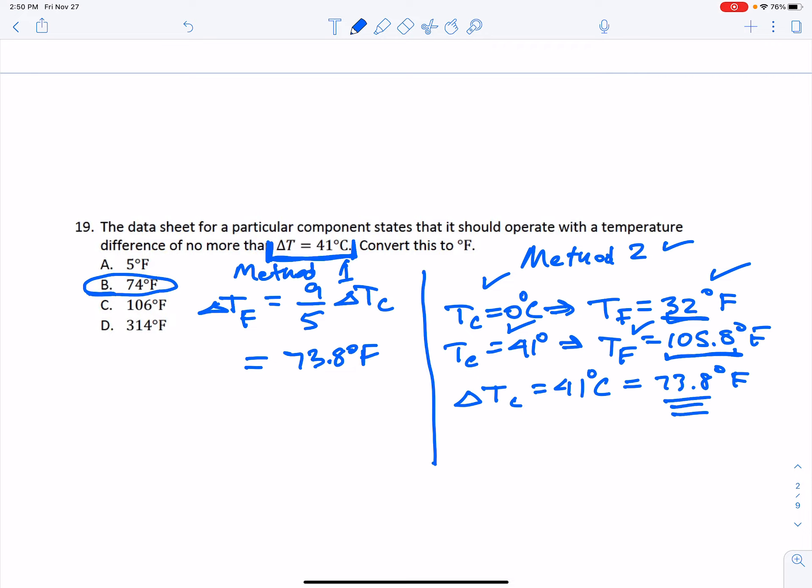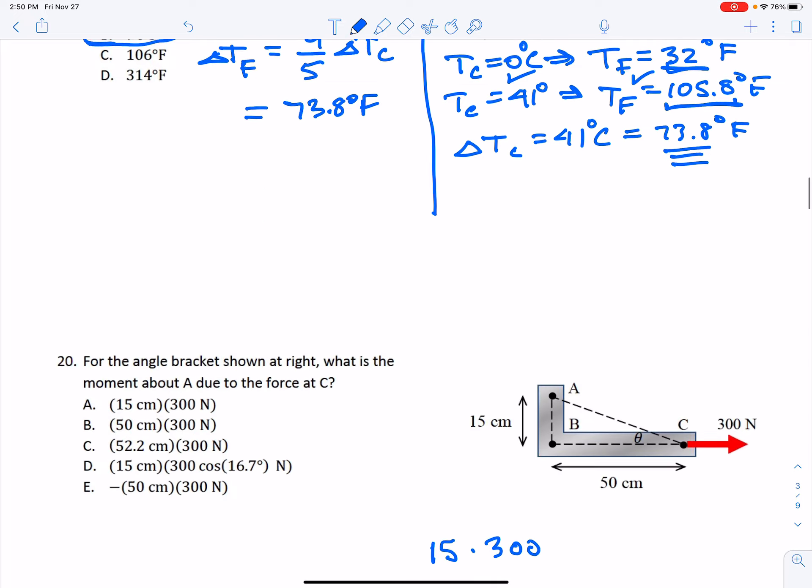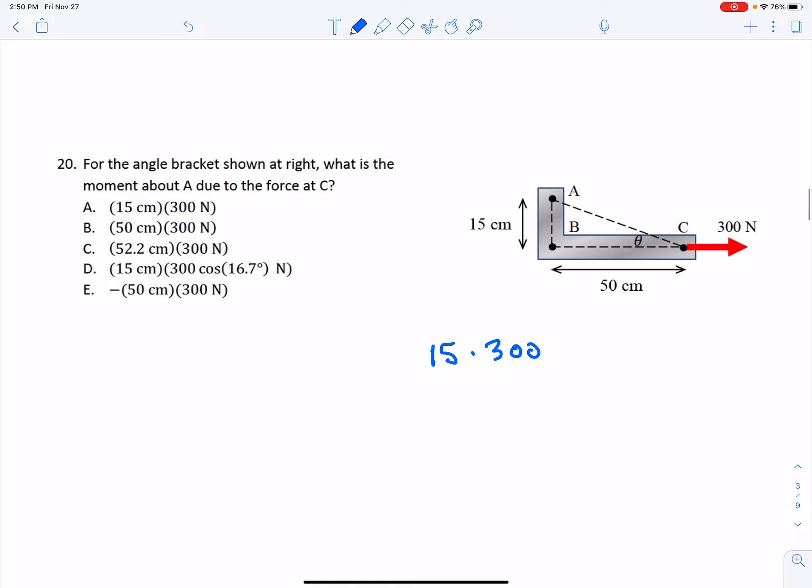That is the basic idea whenever you're looking at something that has a temperature difference instead of an absolute temperature conversion. Next, on problem 20, we're asked to calculate the moment about A due to force C. We see here we know this line of action of the force, and so all we need to know is the vertical distance to that line of action of force.